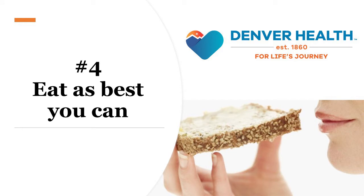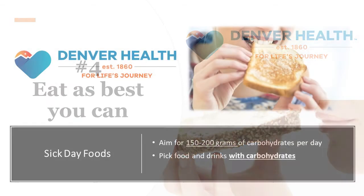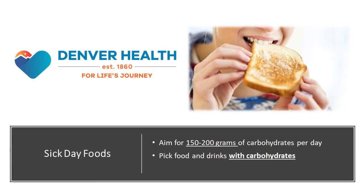4. Try to eat as best you can. When you're sick, your body still needs fuel in order to function. If you can't eat solid foods, try soft or liquid foods that contain carbohydrates. Aim for about 150 to 200 grams of carbohydrates per day, divided out in small, frequent meals. When you're substituting normal meals for sick day foods, you do want to choose foods that contain carbohydrates. These foods should be easy to digest and keep down, so you can safely take your fast-acting insulin.